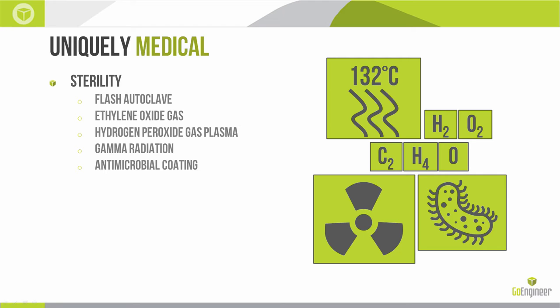Ethylene oxide gas (ETO) sterilization using Amproline AN74I on a 12-hour cycle achieves a 100% success rate. Hydrogen peroxide gas plasma on a Sterrad machine at 55 minutes, max temperature 55°C, transporting parts in Tyvek pouches — again 100% sterilization success. Gamma radiation works fine with FDM and the biocompatible Med610 materials on the PolyJet side. Antimicrobial coating was new in my research: Stratasys studied commercially available water-based antimicrobial coatings and showed a 99.9999% reduction in bacterial growth, a 5-log reduction. We have a lot of different sterilization options if you need sterile parts.